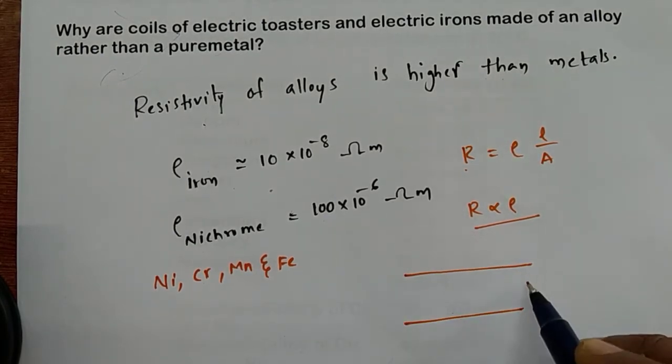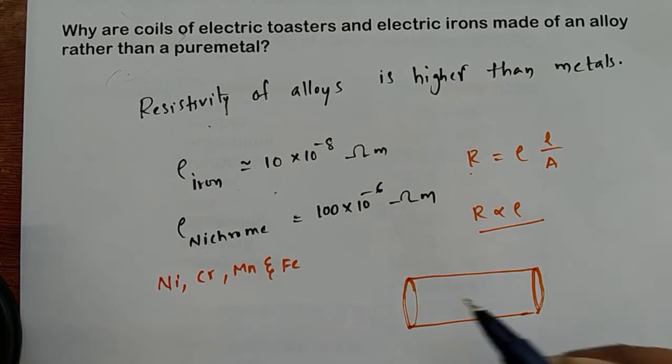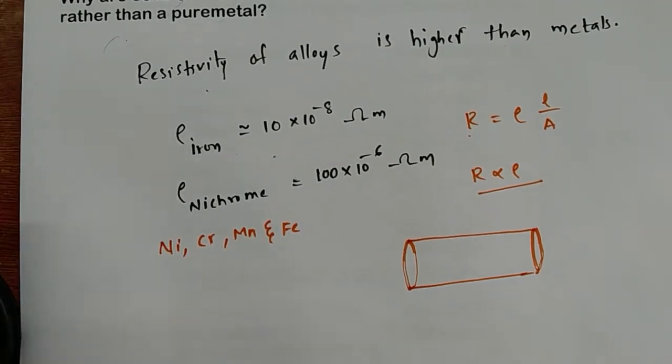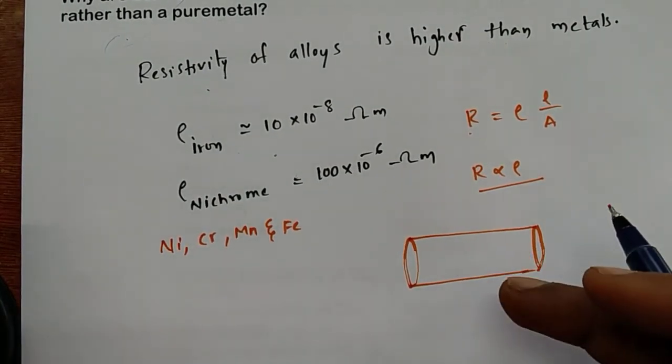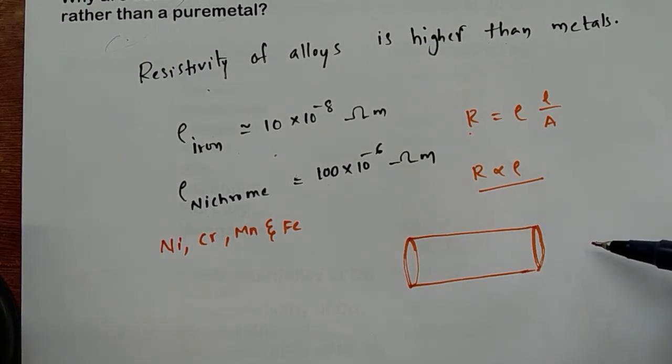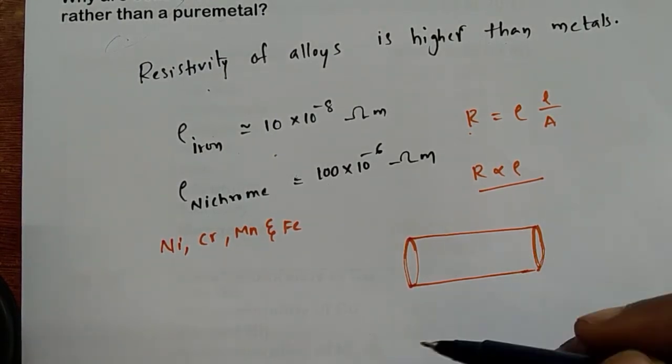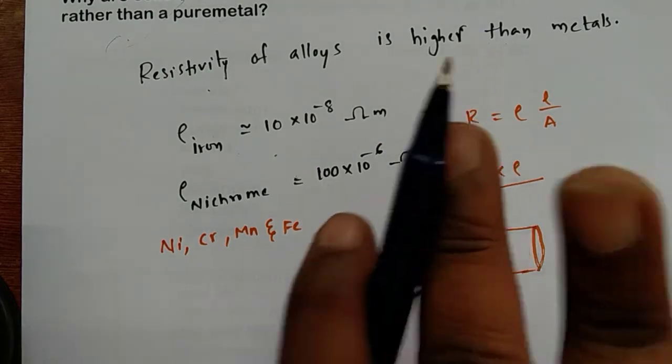if you take a material or conductor which has high resistance, what will happen? High resistance means it won't allow electrons to pass through it easily. It will obstruct them,